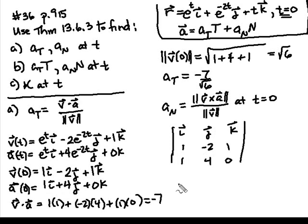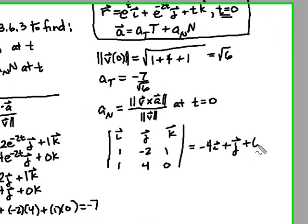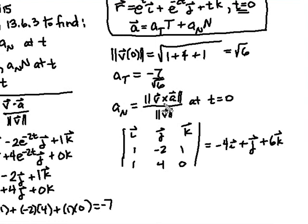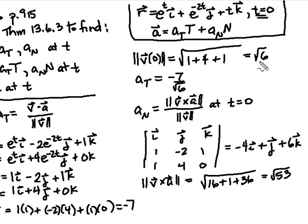The norm of V cross A is the norm of that vector, which is the square root of 16 plus 1 plus 36, which is the square root of 53. Our denominator is the norm of V, which was the square root of 6. So A sub N at zero equals the square root of 53 divided by the square root of 6. That's part A — both the scalar tangential and normal components.